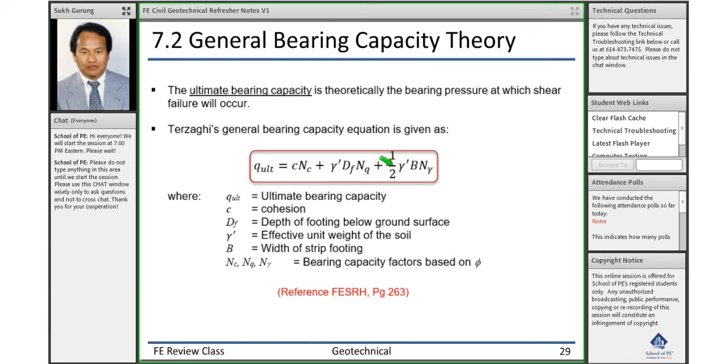B is the width of the foundation. If your foundation is circular, then B is the diameter of the foundation—the width of strip foundations, or if your foundation is isolated and circular, then B equals the diameter.